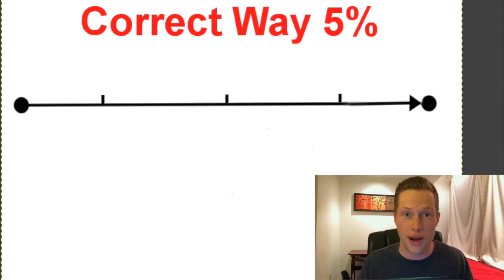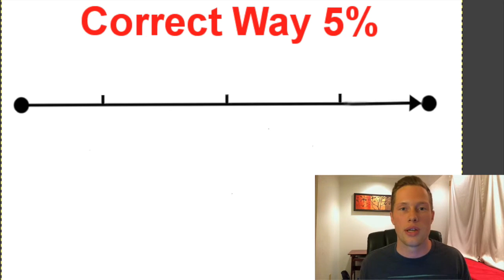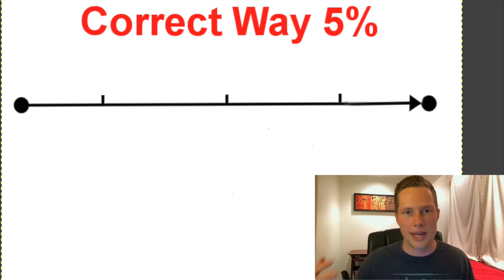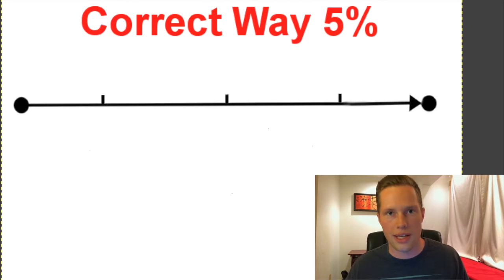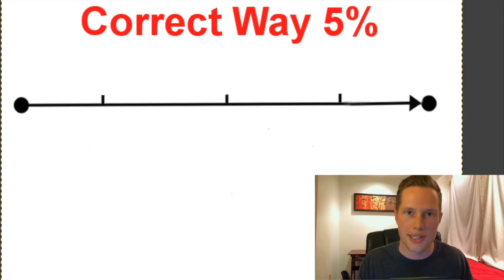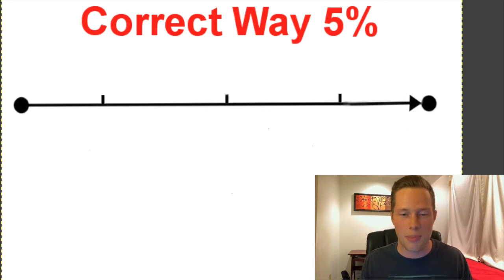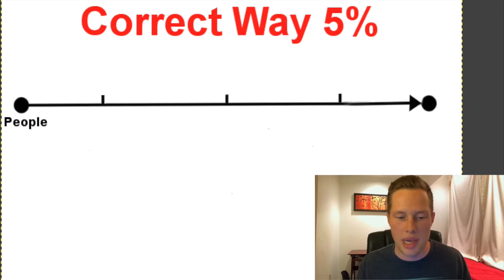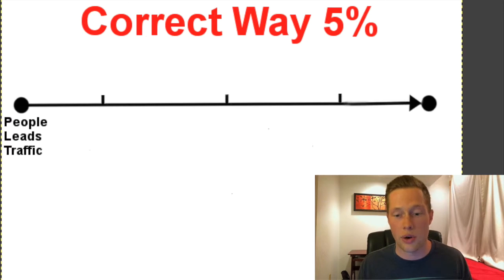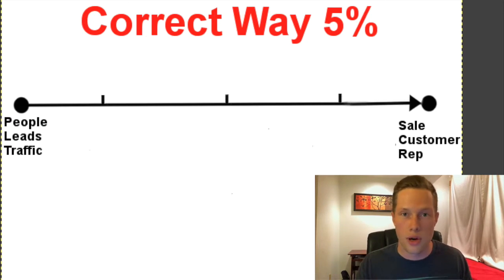This is what 5% of people are doing. So if you observe what the masses are doing, observe why they're struggling, just do the opposite. Same thing as before — you have people, leads, and traffic — but the whole goal is to make a sale, recruit a new customer, or a new rep in your business. And here's how this works: step number one is to build your list. People are going to be adding themselves to your list who actually want to be there.